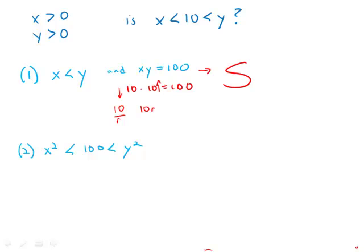Now leaving that aside and moving to statement number two: we have x squared is less than 100, which is less than y squared.